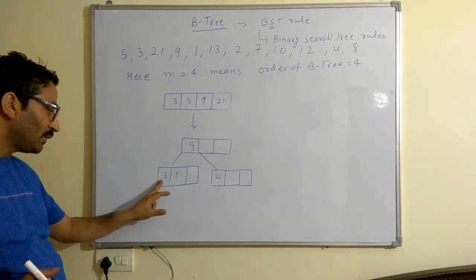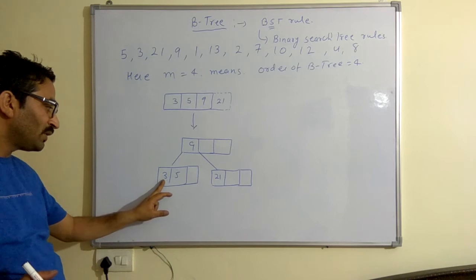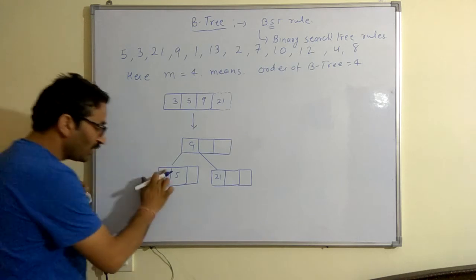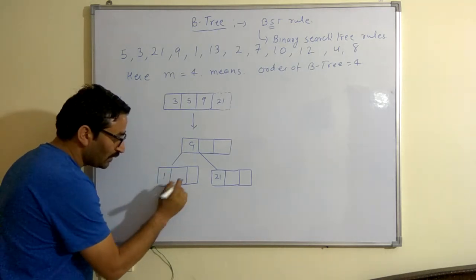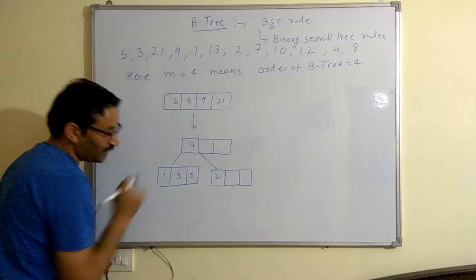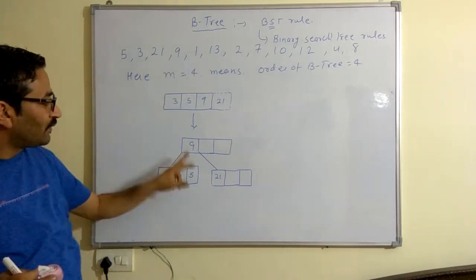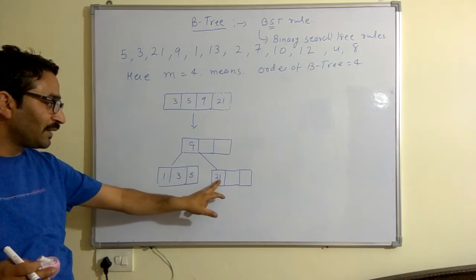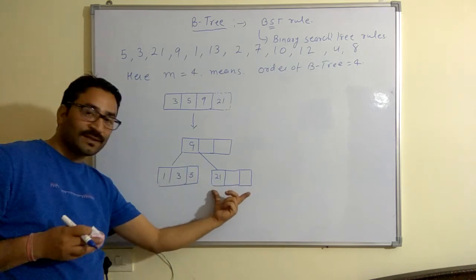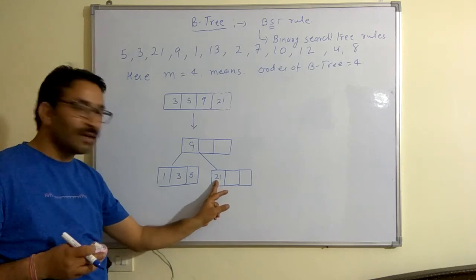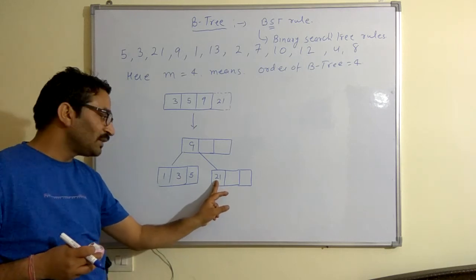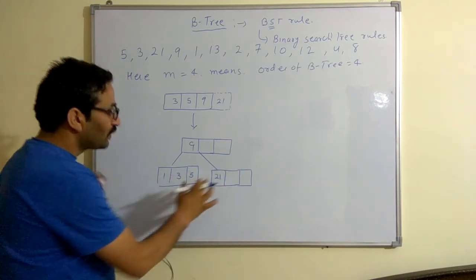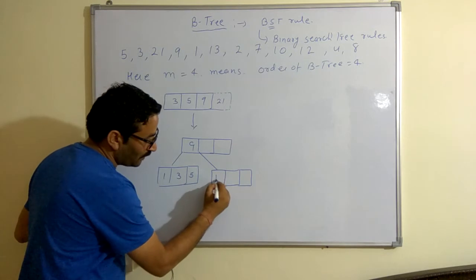We insert 12 and then we will create a new space. Next is 13. Comparing 13 to the right side, the node has been checked and there is space. The property states that we will put the smallest value first and then the highest value.